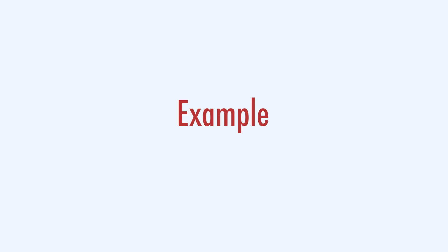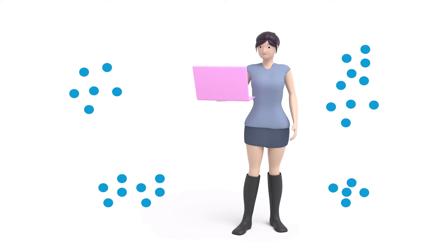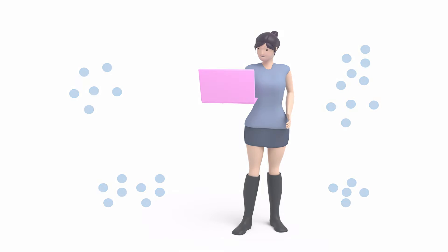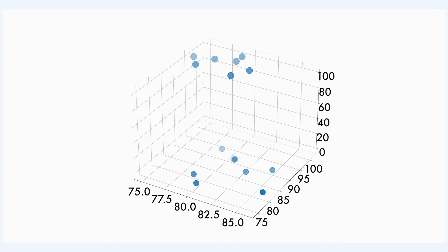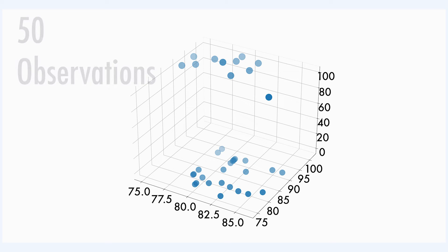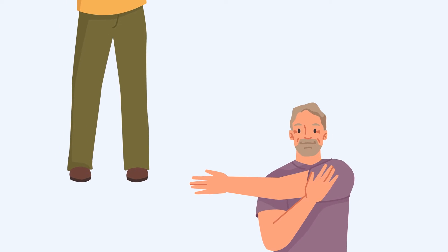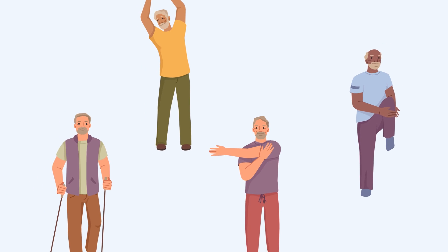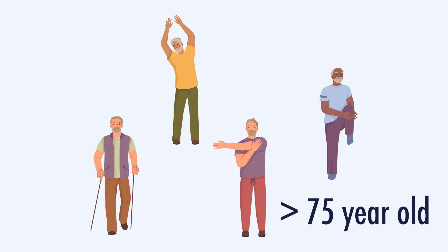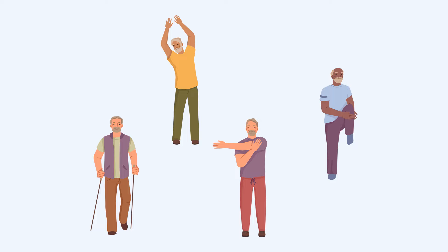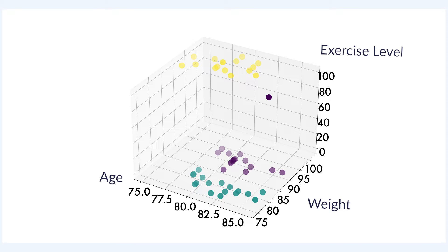Let me give you an example. I will create some synthetic data to demonstrate the clustering methods discussed in this video. The data will have 50 observations, 3 features, and will be composed of 3 clusters. Imagine that all these data points — the 50 observations — are men that work out at a local gym. They are all above 75 years old and some of them are overweight. In this setting, the synthetic set of people will be characterized by three features: the age, the weight, and the level of weekly exercise, either low or high.